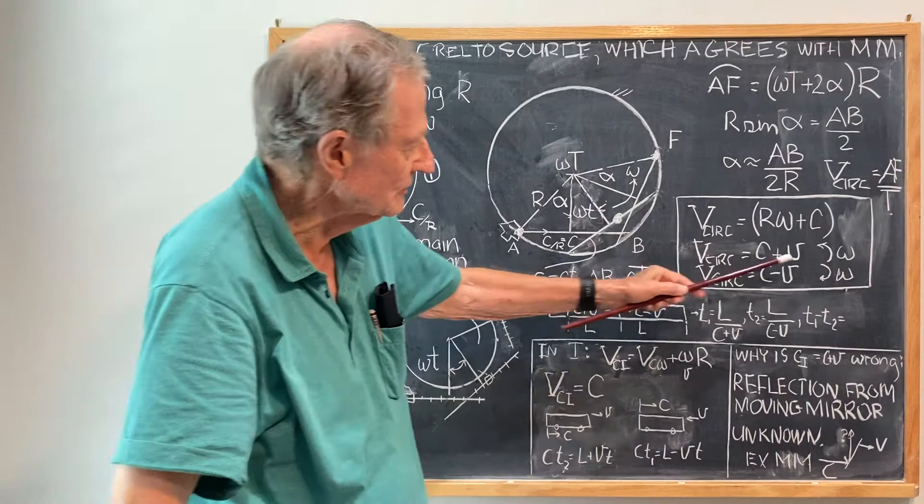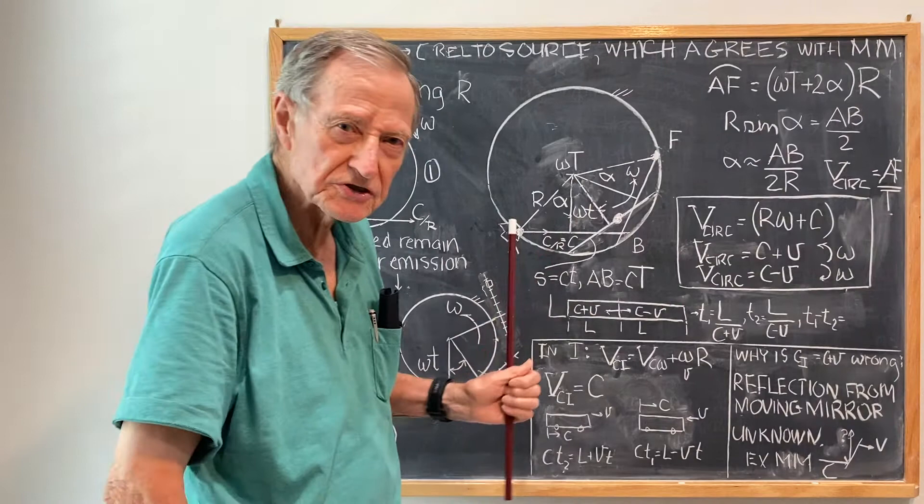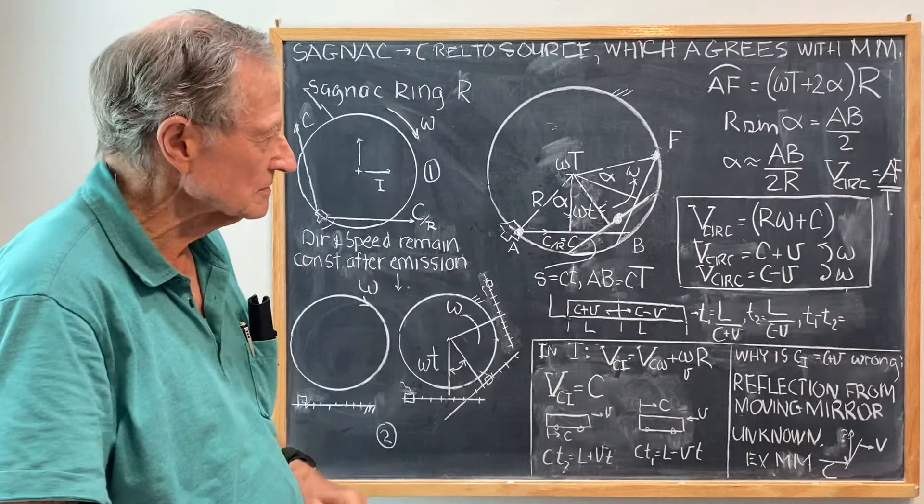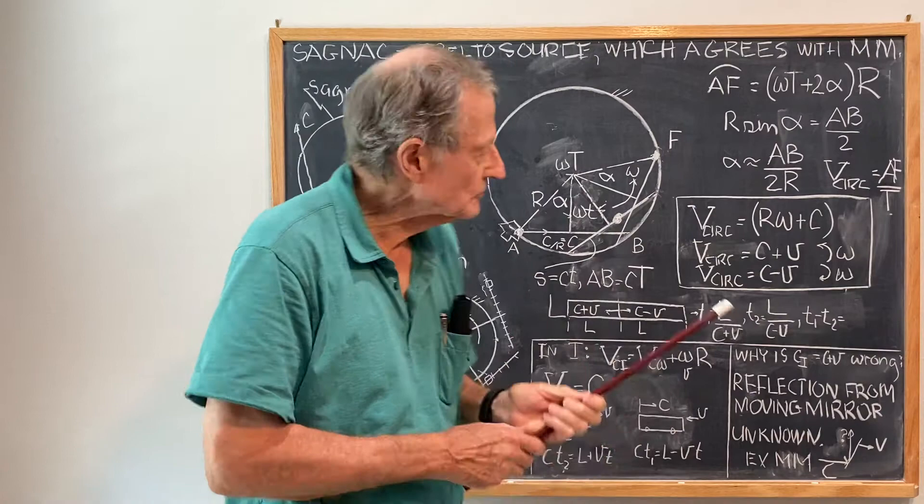So V circumferential is C plus V with omega in this direction. And if you do the same thing for projection in the opposite direction, then you get the result, which is exactly the same as letting omega be negative here. V circumferential in the opposite direction, C minus V. And that's the solution.